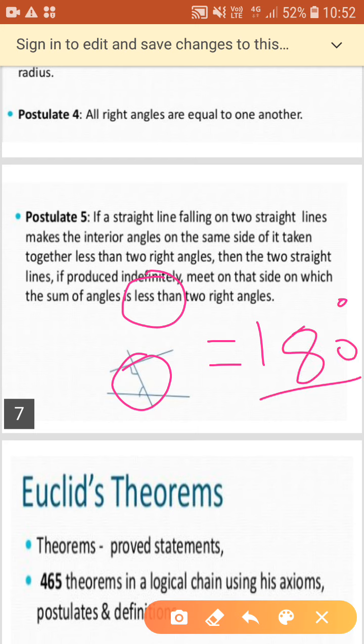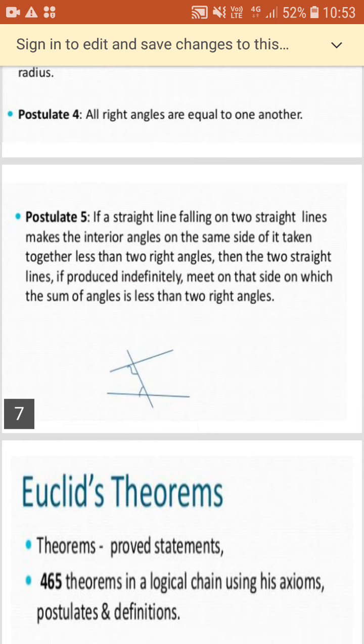If it is exactly 180 degree, then the lines will become parallel. So, now here the parallel line concept also rises from this and Euclid's theorems or the theorems that we have discussed, these are the proved statements and these have been proved by using axioms and postulates. We will be using theorems to prove another set of assumptions and we will be using them throughout geometry that we are going to study.